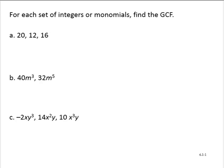For each set of integers or monomials, find the GCF. The GCF refers to the greatest common factor. To find the greatest common factor, the first thing we do is we write the prime factorization of each term.